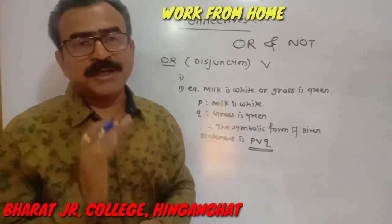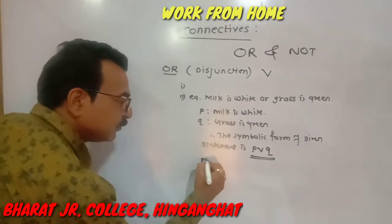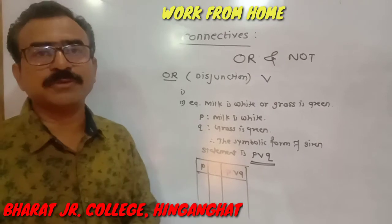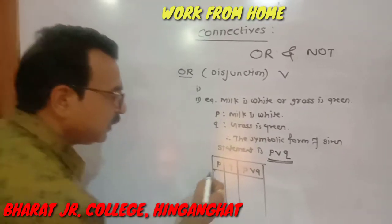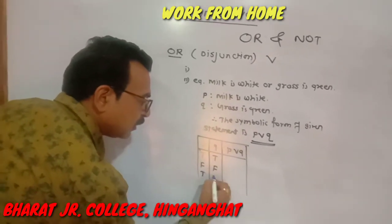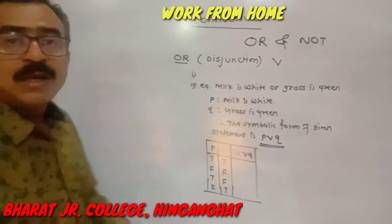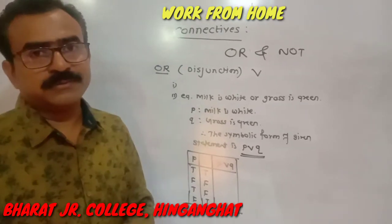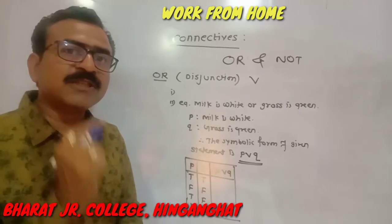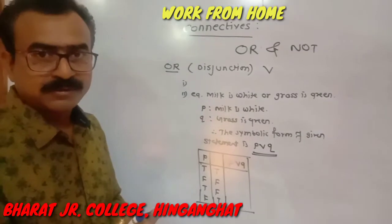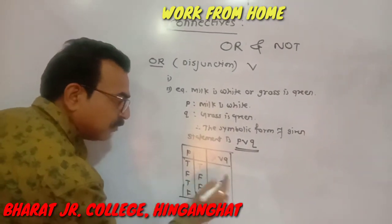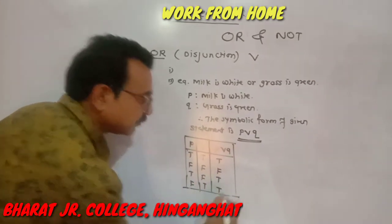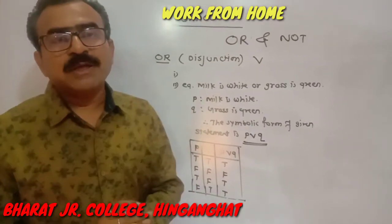Now let us learn the truth table for disjunction. Write down p, q, and p ∨ q. Write down all four possibilities for two statements: T-T, T-F, F-T, and F-F. In case of disjunction, you have to note only one thing: when both statements are false, then their disjunction is false. In the remaining cases, write down T.